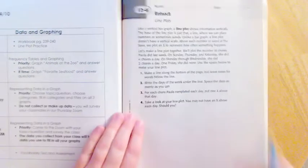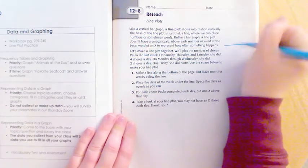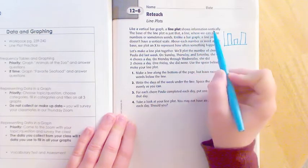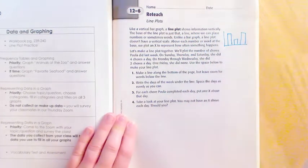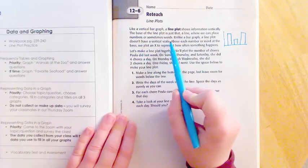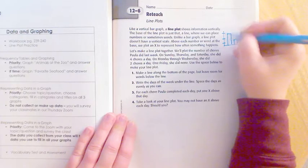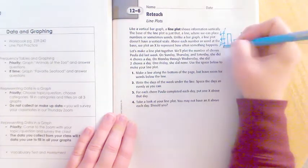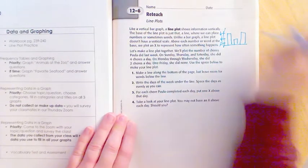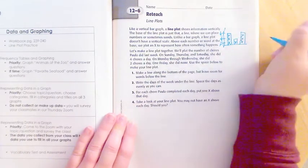Like a vertical bar graph, which means up and down, a line plot shows information vertically. The base is just that, a line where we can place numbers or sometimes words. Unlike a bar graph, the line doesn't have a vertical scale. So a bar graph has like two, four, six - a line plot does not have that. Above each number or word at the base we plot X's, like this, and that would be a line plot.